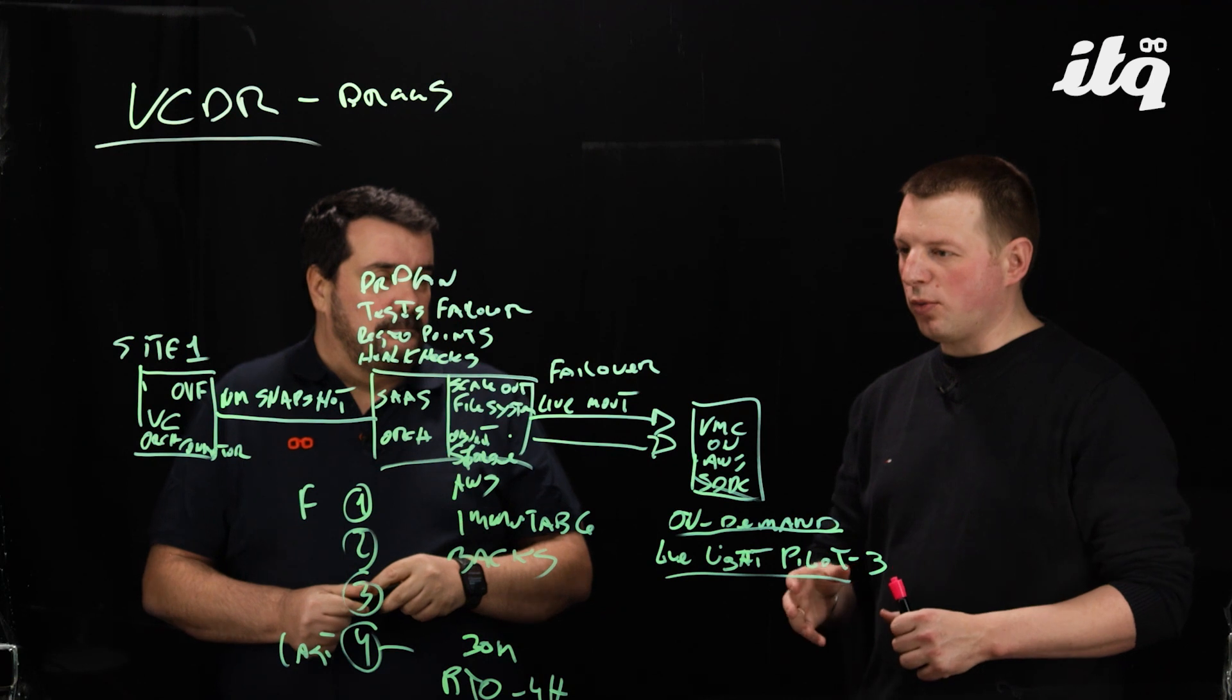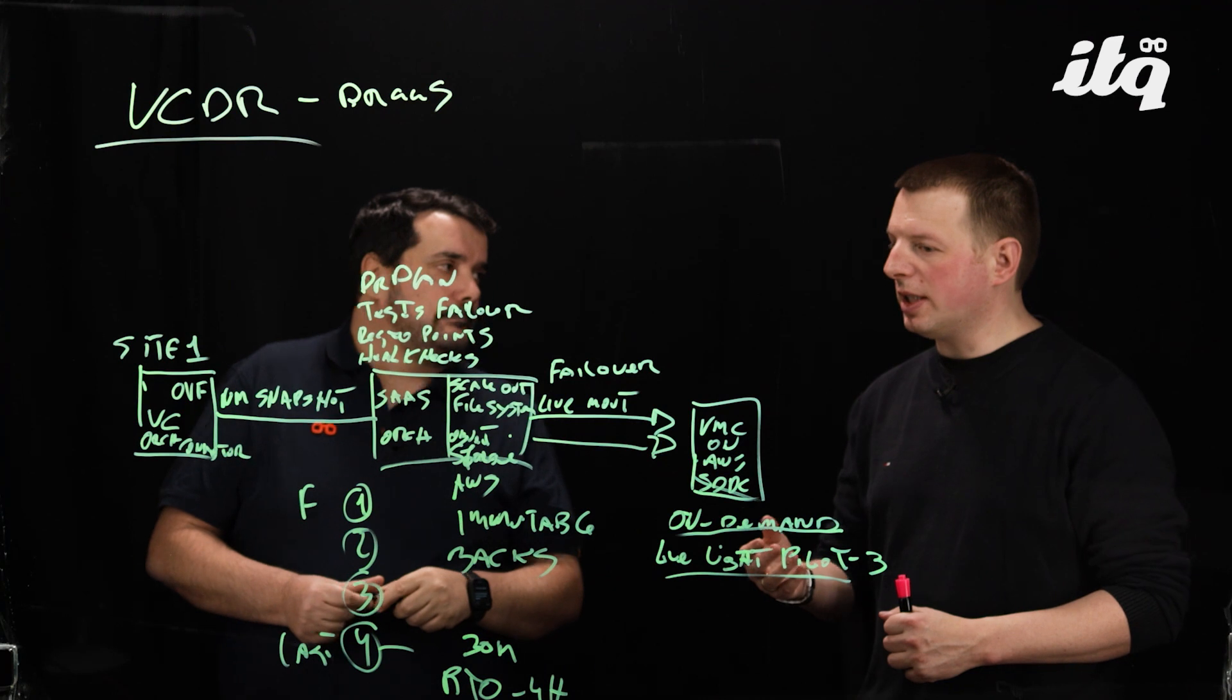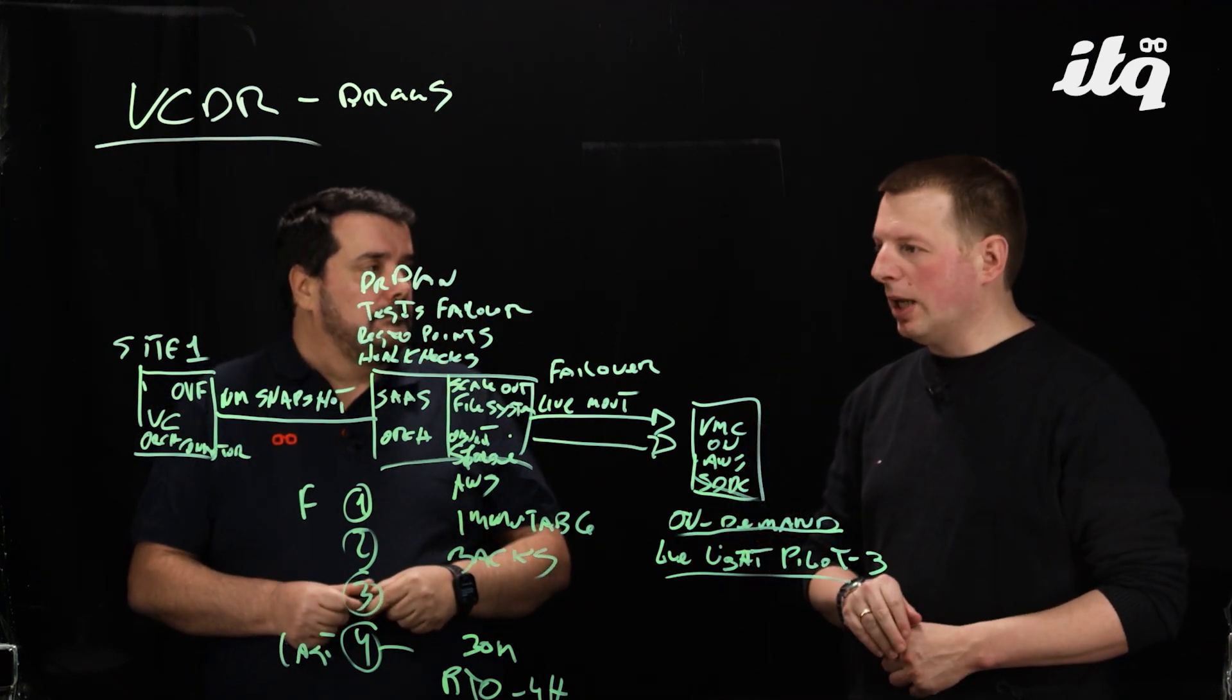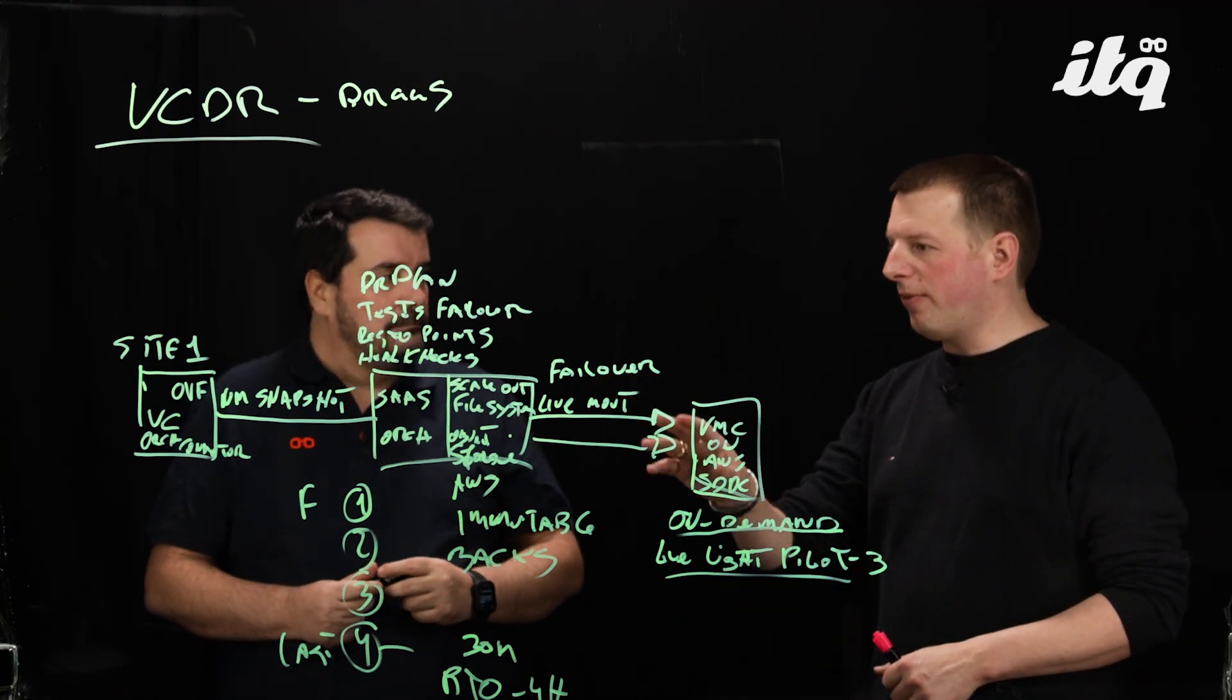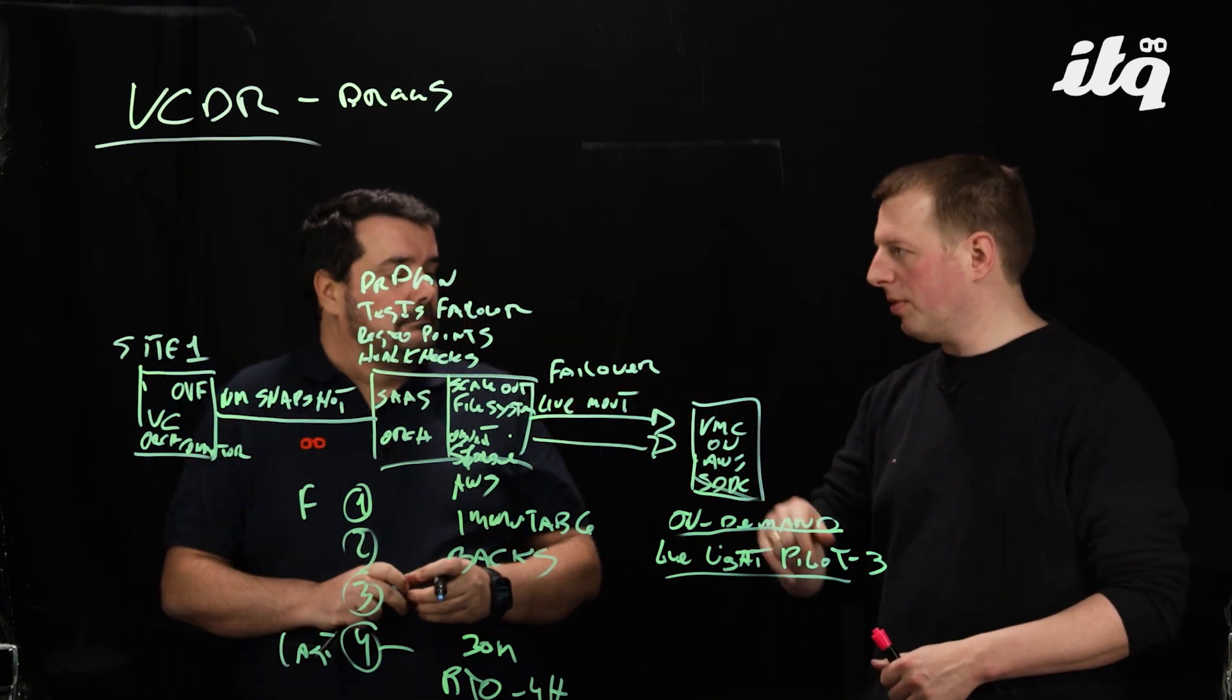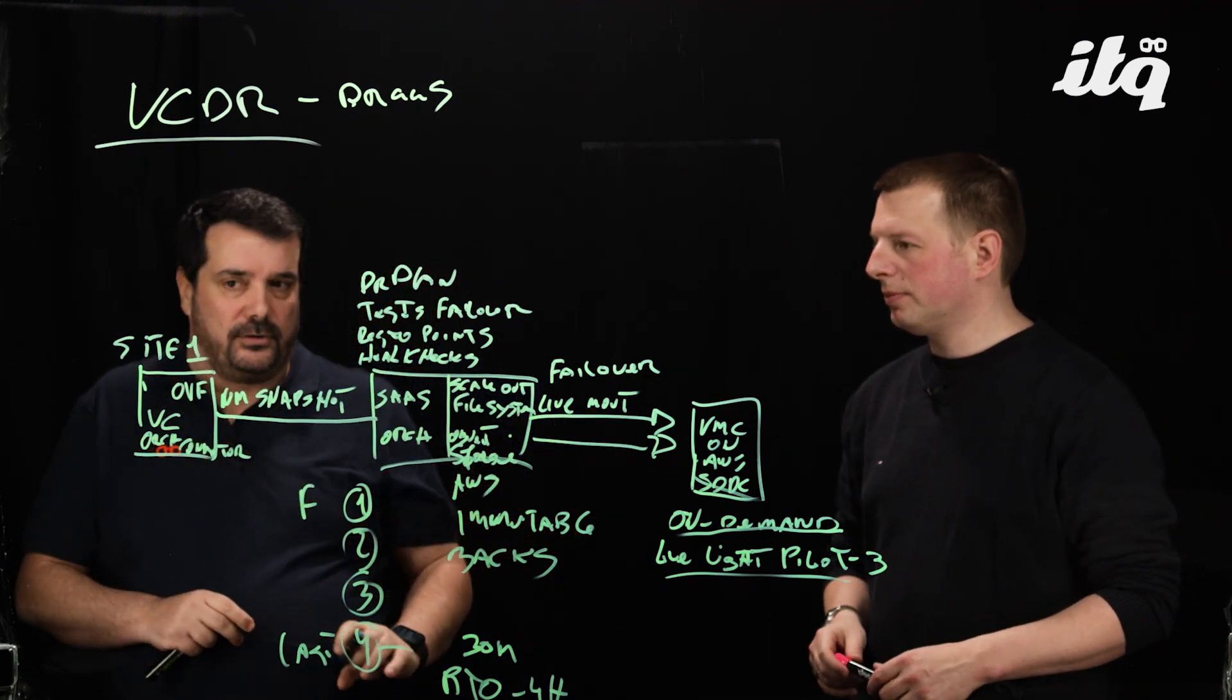So let us imagine, we had a disaster recovery scenario or disaster scenario. We moved over, all working is fine now, all running here now. What happens if we say, okay, we fixed the problem on the source side, ransomware is gone, it's working fine again. And now I want this active site now, we take over, fail back to the original site.